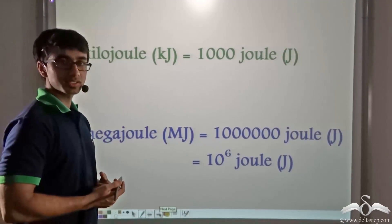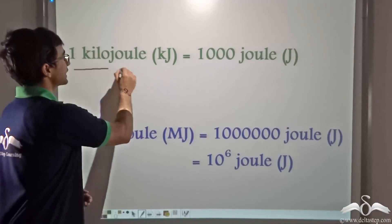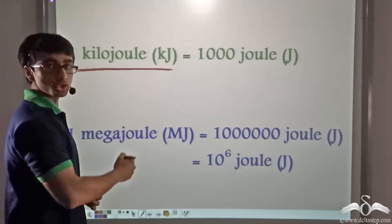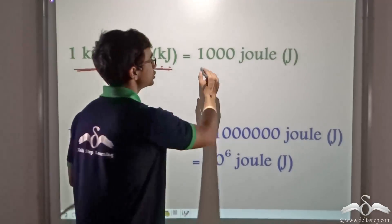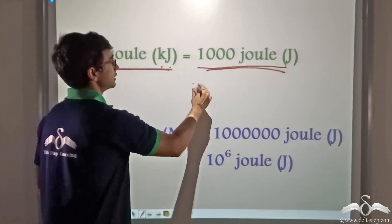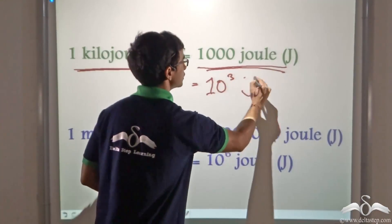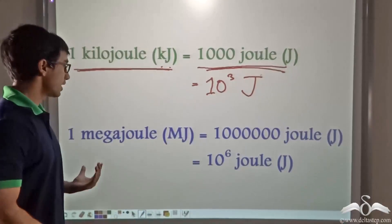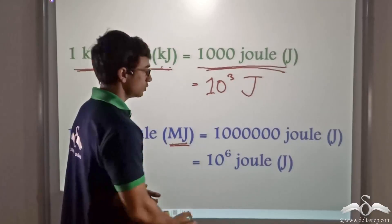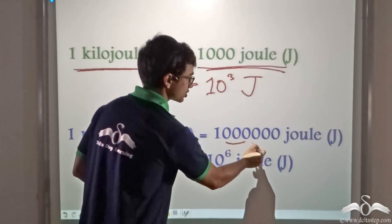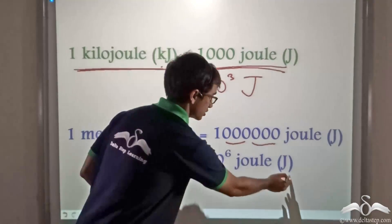Here are certain other units of energy. One kilojoule, represented by kJ, is equal to 1000 joules, or 10 to the power 3 joules. And 1 megajoule, represented by MJ, is equal to 1,000,000 joules, or 10 to the power 6 joules.